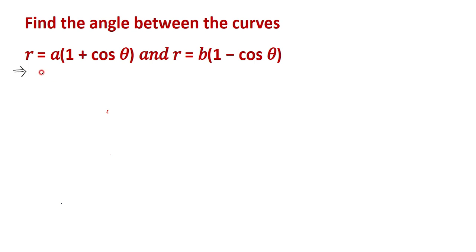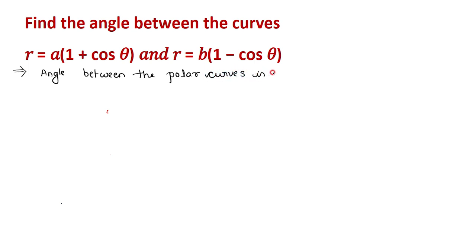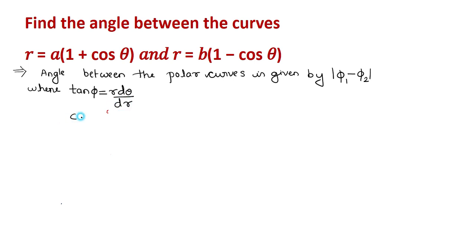The angle between the polar curves is the difference of the angles each curve makes between its radius vector and its tangent. The angle between the polar curves is given by the modulus of φ₁ minus φ₂, where tan φ = R dθ/dr, or equivalently cot φ = (1/R)(dr/dθ). This is the formula to find the angle between the radius vector and tangent to any polar curve.